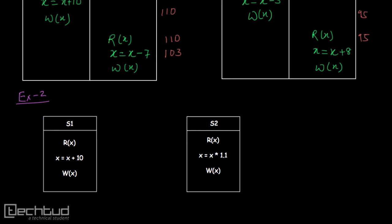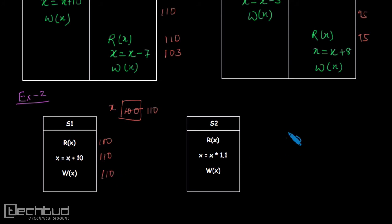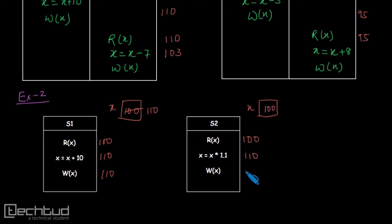We start again with X = 100. In schedule S1: read X — it reads 100 — then increase X by 10, so it becomes 110, then write X — so 110 is written back. Now running schedule S2 over the same variable X = 100: it reads the value 100, increases by 10 percent (multiplies by 1.1), so it becomes 110, then writes back 110.